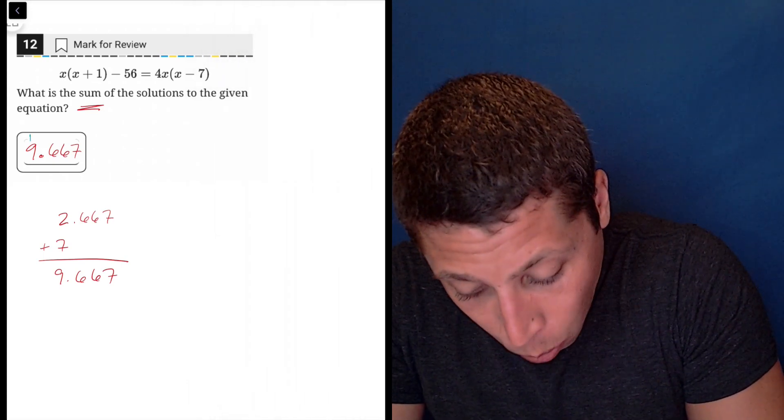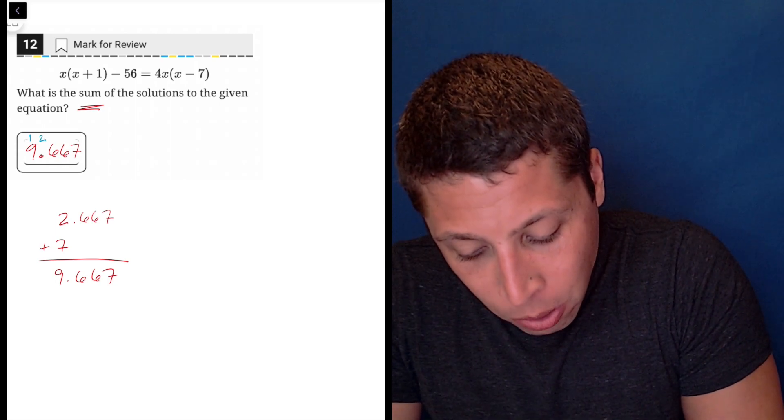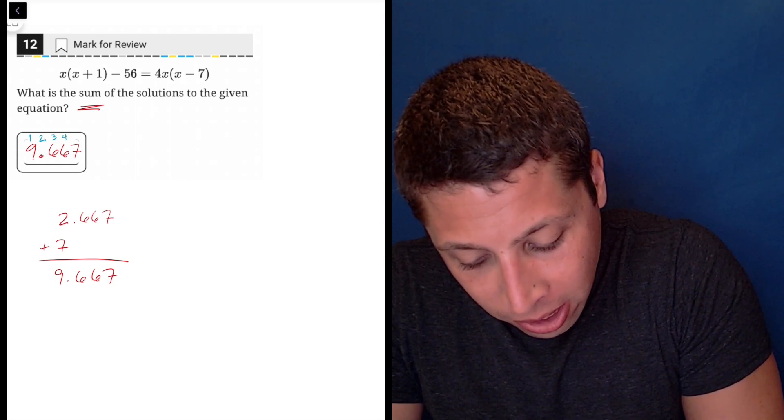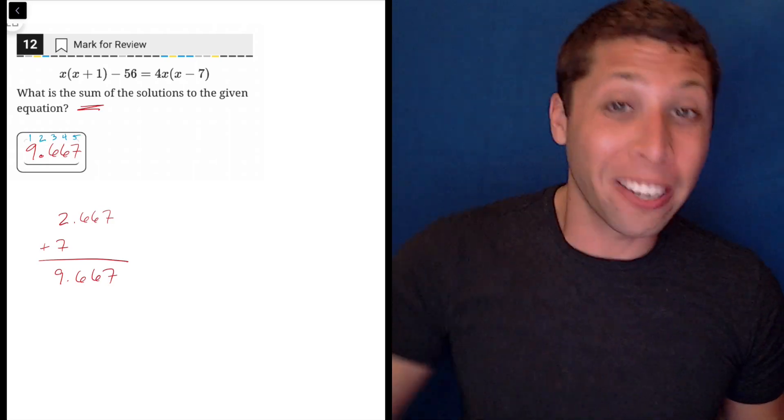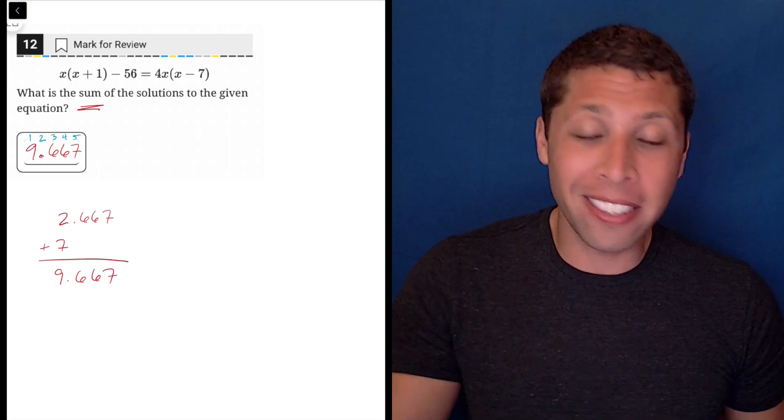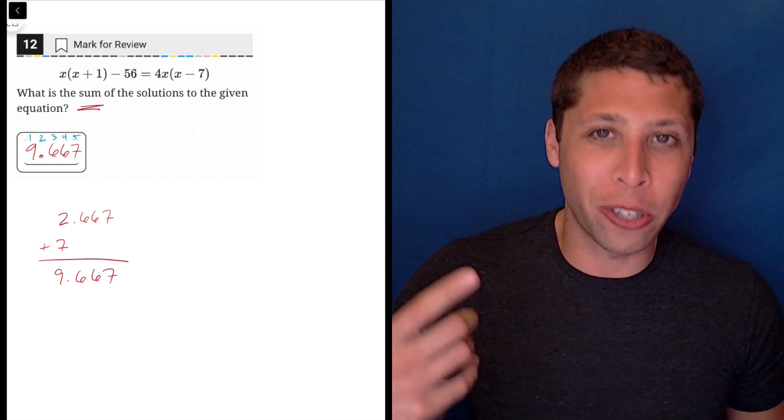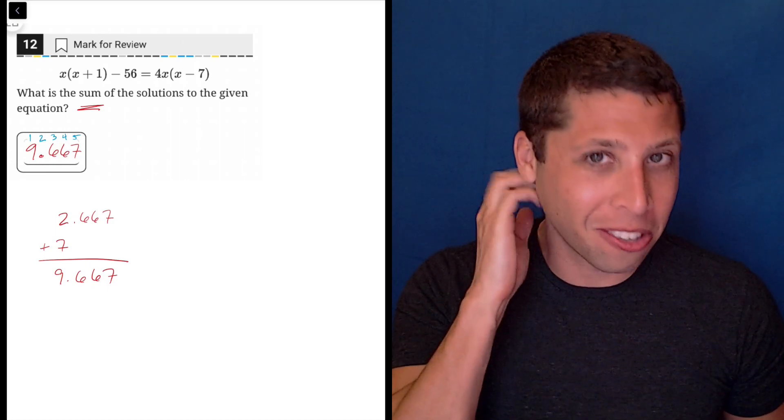We have the one, the nine is one, the decimal point is two, the six is three, the other six is four, and the seven is five. The reason this is confusing is that if it's a negative number, then for whatever reason, the SAT is going to give you one extra space. And so you're going to have a space for the negative and so it's six total.